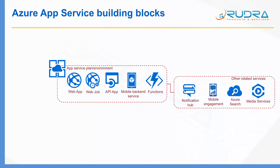Apart from these related services, there is one more service which is very important when it comes to APIs: API Management. API Management can act as a wrapper around your API apps when you are exposing those APIs to the outside world. It comes with a lot of features such as throttling, security, and it will be really useful if you want to commoditize your APIs and sell them to the outside world.